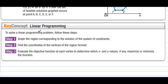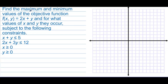Linear Programming: to solve a linear programming problem, follow these steps. First, graph the region corresponding to the solution of the system of constraints. Then find the coordinates of the vertices of the region formed, and evaluate the objective function at each vertex to determine which x and y values maximize or minimize the function. Find the maximum and minimum values of f(x) = 2x + y and for what values of x and y they occur, subject to the following constraints.